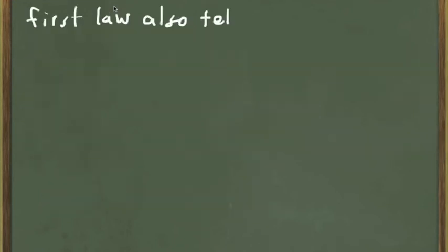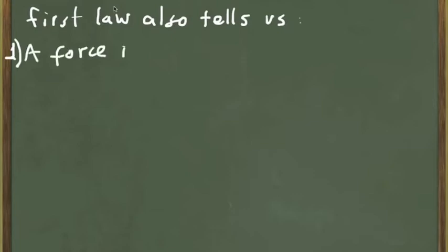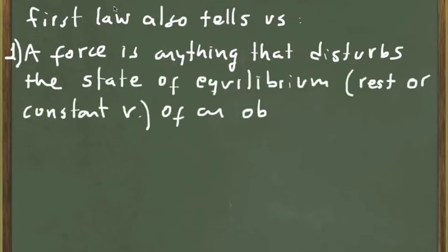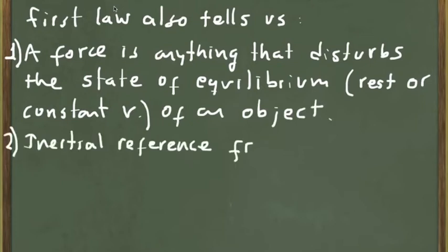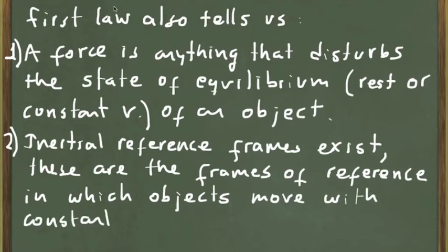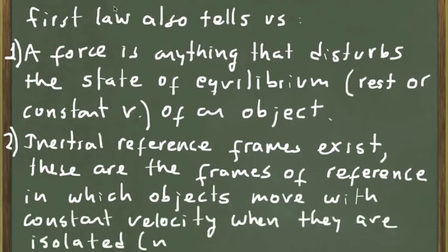The first law also tells us a few things that are important. The first one is that the force is anything that disturbs the state of equilibrium, rest, or constant velocity of an object. The second one is that inertial reference frames exist. These are the systems of reference in which objects move with constant velocity when they are isolated, when there are no forces acting on them.